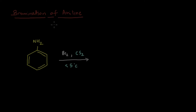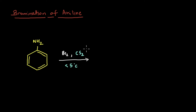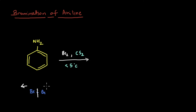Let's see if trying a different solvent helps. We are using a non-polar solvent this time, which is CS2 or carbon disulfide. This is a non-polar solvent, and the more the polarity, the more the dissociation, because polarity helps pull both bromines apart. In the case of CS2, because it is non-polar, it will not easily break the bromine-bromine bond. So we'll have less of the electrophile - the bromine with a positive charge - available for the reaction.